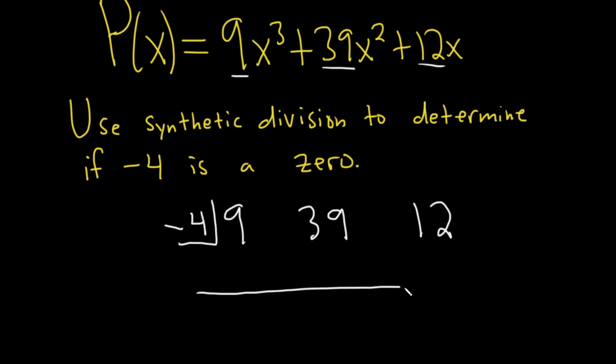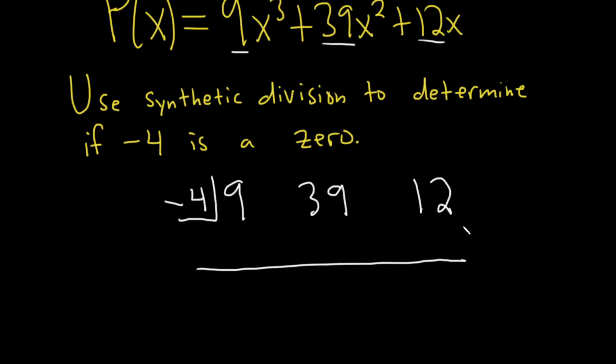Then you draw a line. And we're going to use synthetic division, and then if the remainder is 0, then we know that negative 4 is a zero. If it's not 0, then it's not a zero. So we just have to work this out and see if we get a remainder of 0.